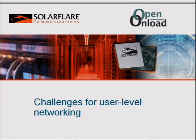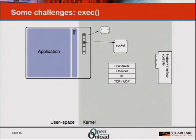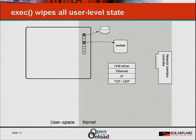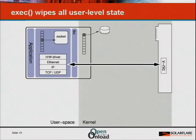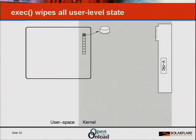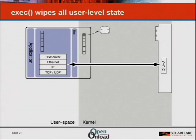Steve mentioned earlier there are difficulties with user-level networking — they all arise from the fact that the OS has no idea what we're doing. First: exec. What happens when you do exec? Everything disappears. In the kernel, that's fine — you've still got your kernel portion of the process state referencing the socket. But in our user-level stack, everything's gone. The application comes back, it's forgotten all about the socket and all of its protocol state, and there's no way to save you from that.